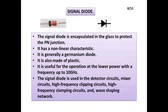Signal Diode: The signal diode is encapsulated in glass to protect the PN junction. It has non-linear characteristics and is generally a Germanium diode, though it is also made of plastic. It is useful for operation at lower power with a frequency up to 10 GHz. It is used in detector circuits, mixer circuits, high-frequency clipping circuits, high-frequency clamping circuits, and wave-shaping networks.